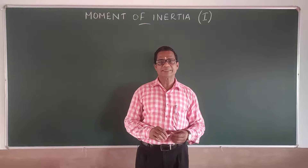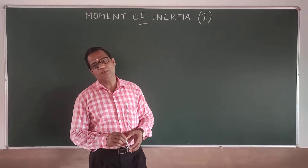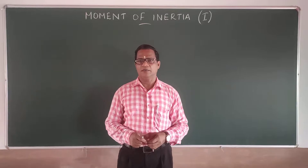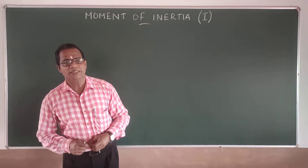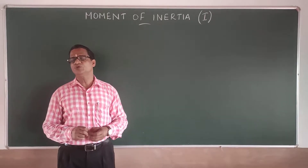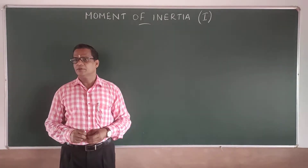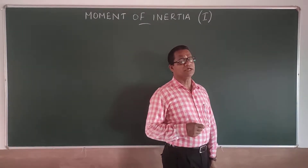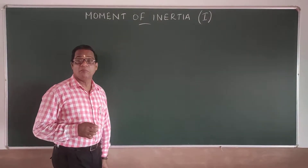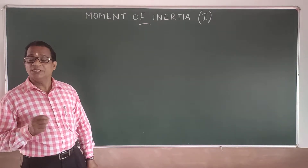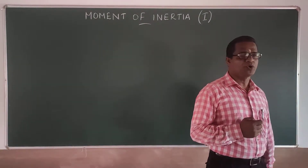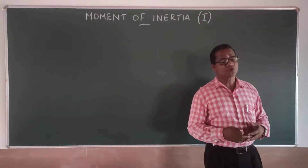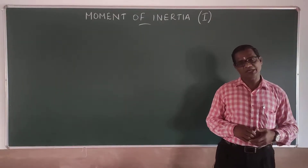In this video we discuss the property of a rotating body called moment of inertia. Inertia is the inability of a body to change its state by itself — that we studied in linear motion. There we found that this inability is measured in terms of the mass of the body. So linear inertia is measured by mass: as mass increases, linear inertia also increases.